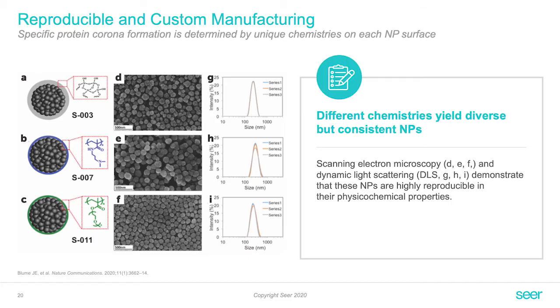Let's now focus on our recent Nature Communications publication. I'd like to share some data on reproducibility, depth, and overall performance of the Proteograph, which is an integrated platform for five nanoparticles facilitating deep proteomics. Looking at the reproducibility of the nanoparticle engineering itself, in this slide you see three examples of nanoparticles with a very specific physicochemical makeup. Looking at the size distribution, we see that across different batches our nanoparticles are extremely reproducible, which is very important as these physicochemical properties drive specific protein corona formation.